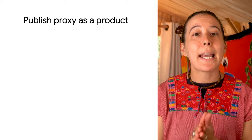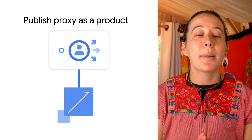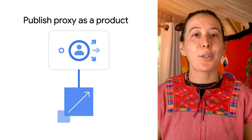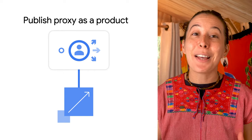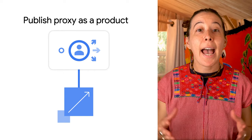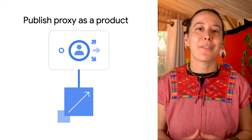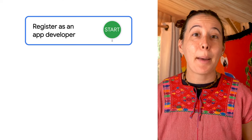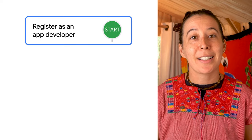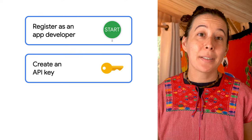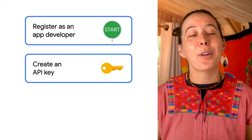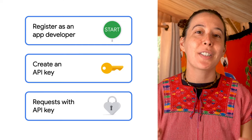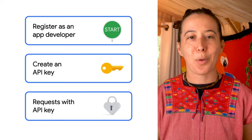Next, you bundle the API proxies and publish them in an API product. Then you let your developers know that the API product is available. Once app developers know about the availability of your API product, they can register as an app developer, create an app to obtain an API key for that API product, and finally make requests to your services passing the API key with each request.